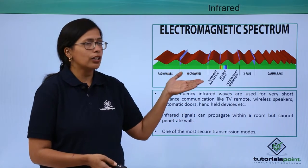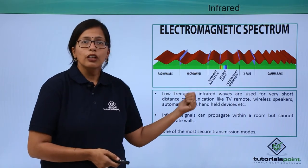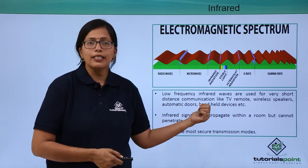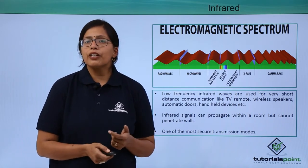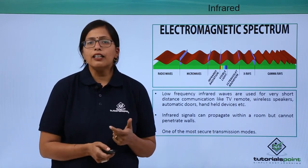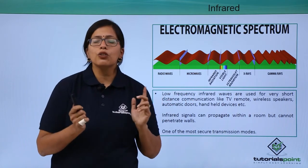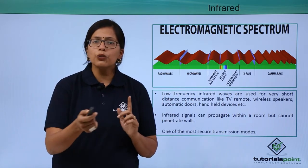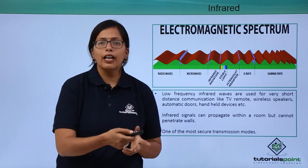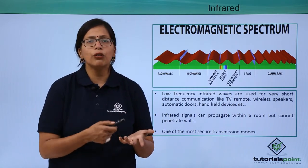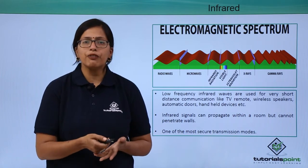For example, I am using this instrument here to move my slides — this is using infrared waves. The disadvantage with infrared waves is that they cannot travel a long distance and cannot penetrate the walls of a room, so they can only be used for communication within a room. Your TV remote and your AC remote, for example, use infrared waves for communication.